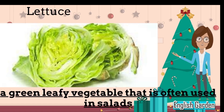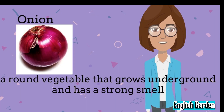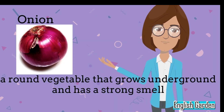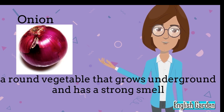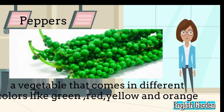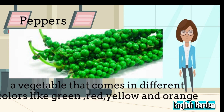Lettuce, a green leafy vegetable that is often used in salads. Onion, a round vegetable that grows underground and has a strong smell. Peppers, a vegetable that comes in different colors like green, red, yellow, and orange.